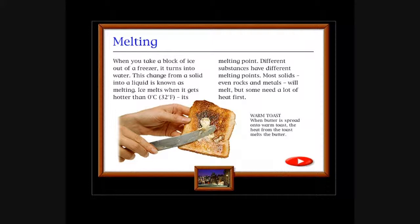Visit land of ice, water, and steam. Melting: When you take a block of ice out of the freezer, it turns into water. This change from a solid into a liquid is known as melting. Ice melts when it gets hotter than 0°C (32°F), its melting point. Different substances have different melting points. Most solids, even rocks and metals, will melt, but some need a lot of heat. Warm toast: When butter is spread onto warm toast, the heat from the toast melts the butter.